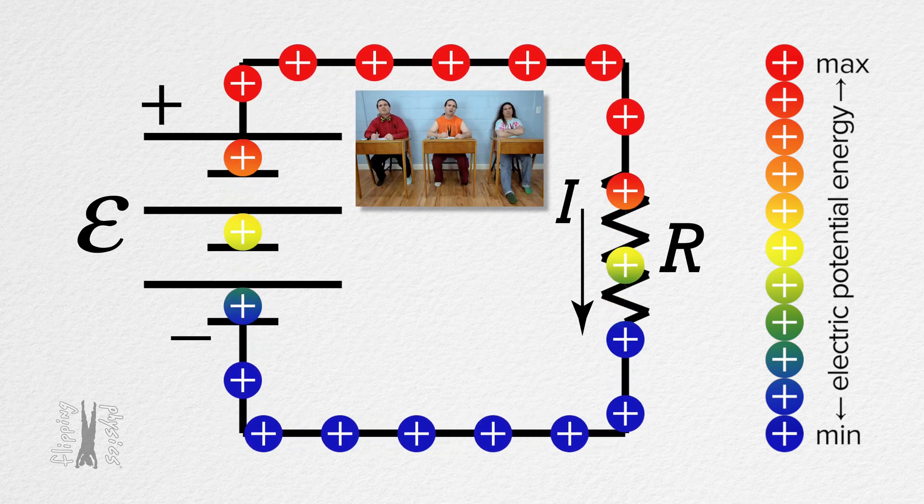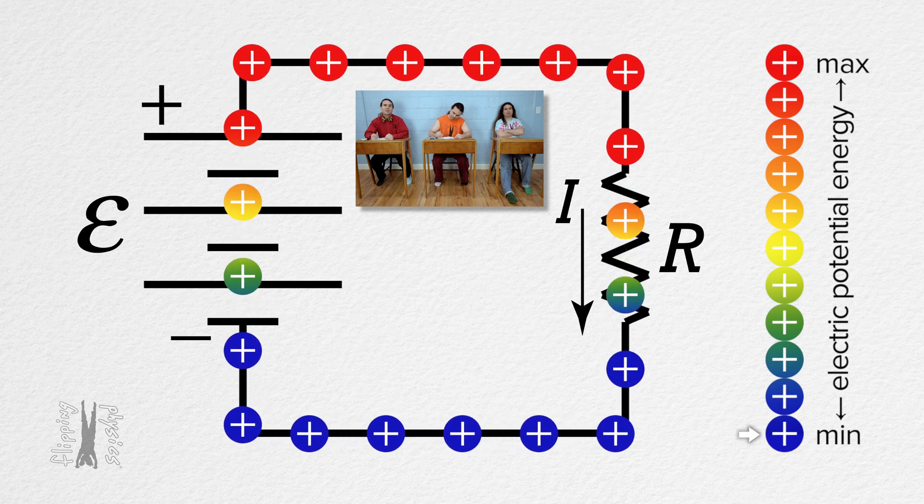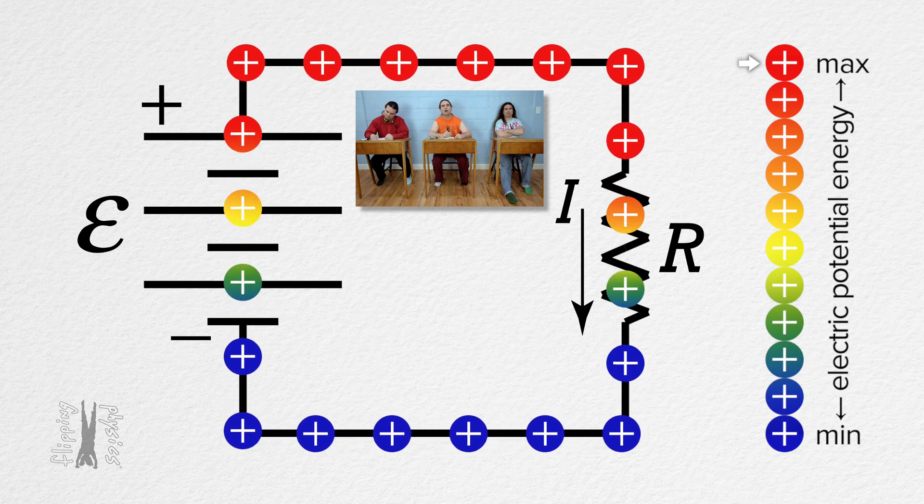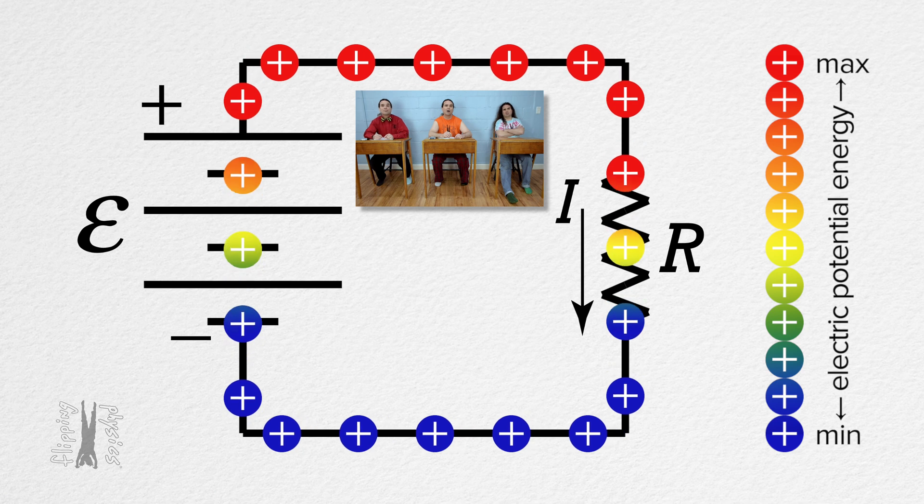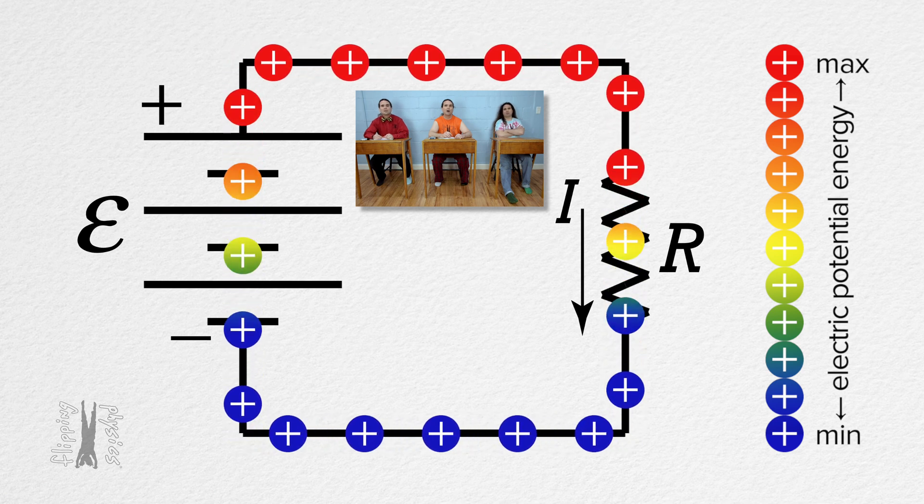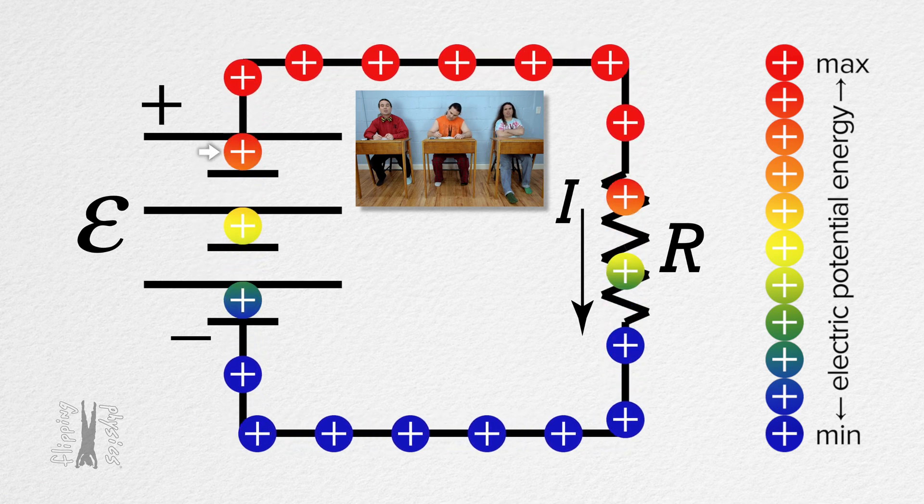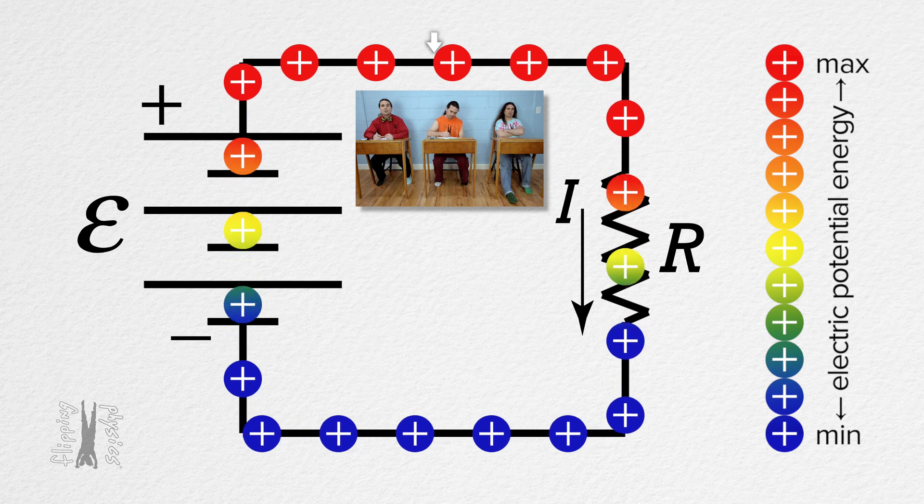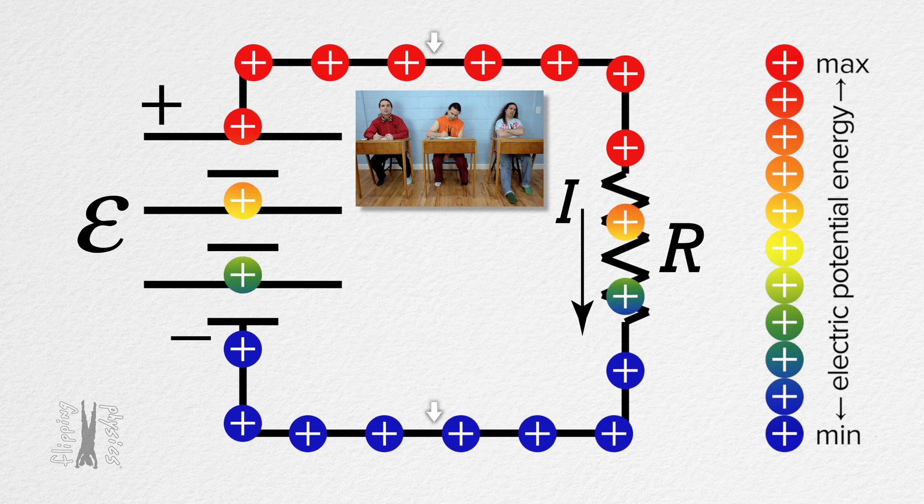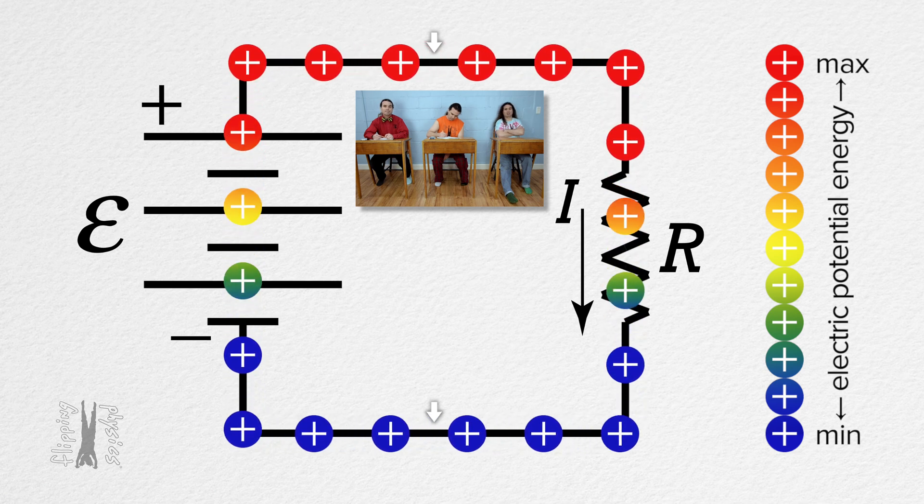Looks like you have chosen the color blue to illustrate the minimum electric potential energy of the charges, and red to illustrate the maximum electric potential energy of the charges. And this is pretty much what Billy just said. As charges move through the battery, they go from blue to red because they gain electric potential energy. As charges move along the top and bottom wires, the charges maintain a constant color because they maintain a constant electric potential energy because the wires are ideal and have negligible resistance.